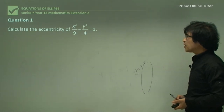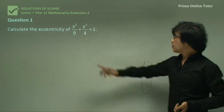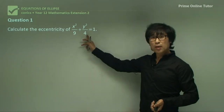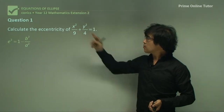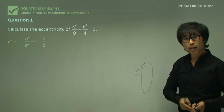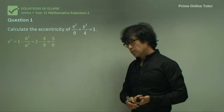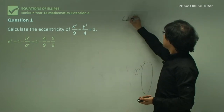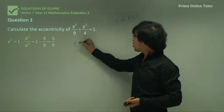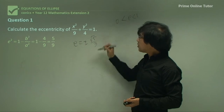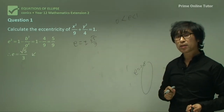Question 1: Find and calculate the eccentricity. Write 1 minus smaller divided by bigger, then calculate. Make sure eccentricity is always positive — remember, eccentricity sits between 0 and 1. The answer is the square root of 5 divided by 3, and we take only the positive value.